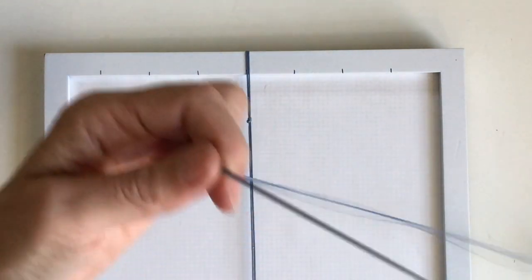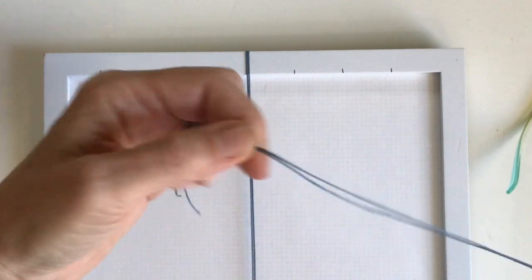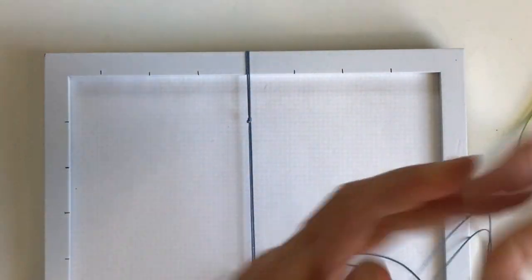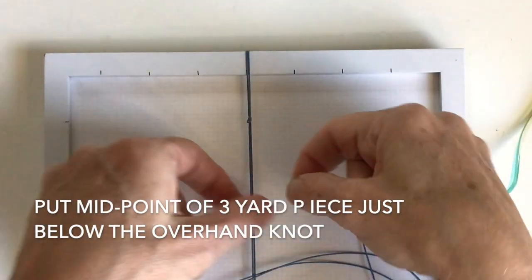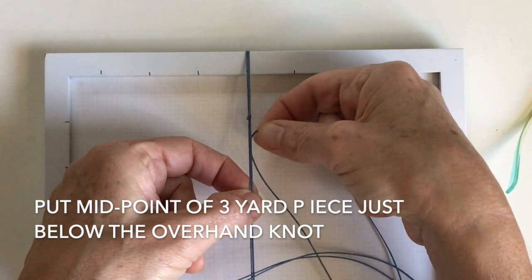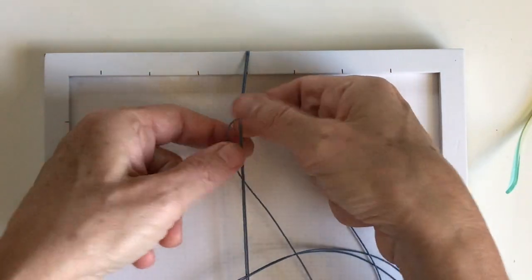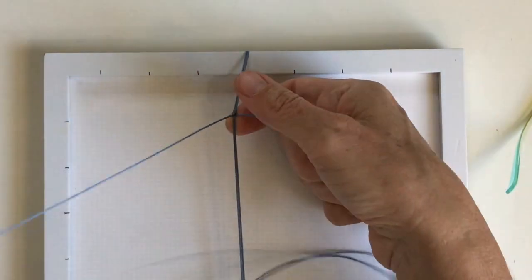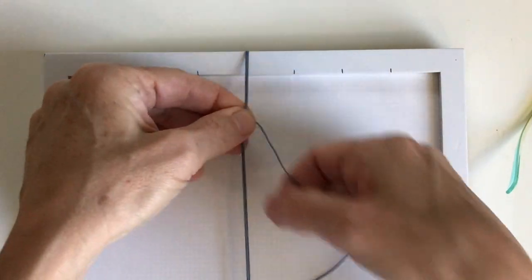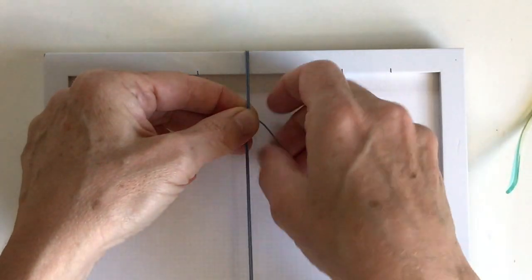I'm going to take the three yard length of cord and I've found the middle point. And I'm just going to take the midpoint and put it just below the half knot. And get your lengths to either side.